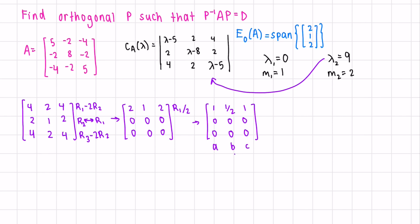We can say b and c are parameters. Our equation would be a plus one half b plus c equals zero. Let's isolate a. a is negative one half b minus c. Now let's write our solution. We can factor out b and c. b, we would have negative one half, then one zero. For our second solution, we'll have negative one zero one. We can now write that the eigenspace of nine for our matrix A is the span negative one two zero. I multiplied this by two, negative one zero one.